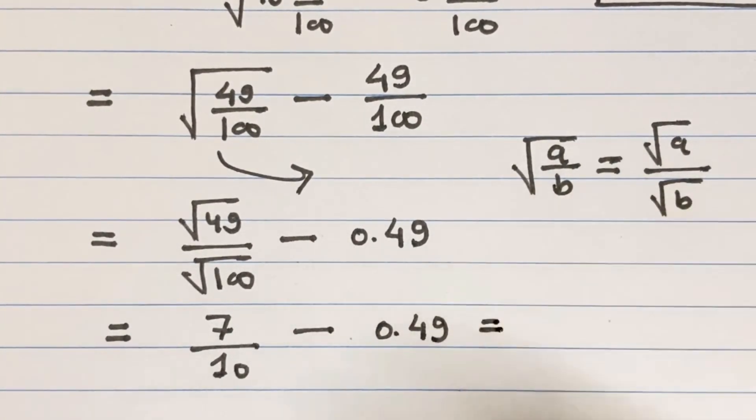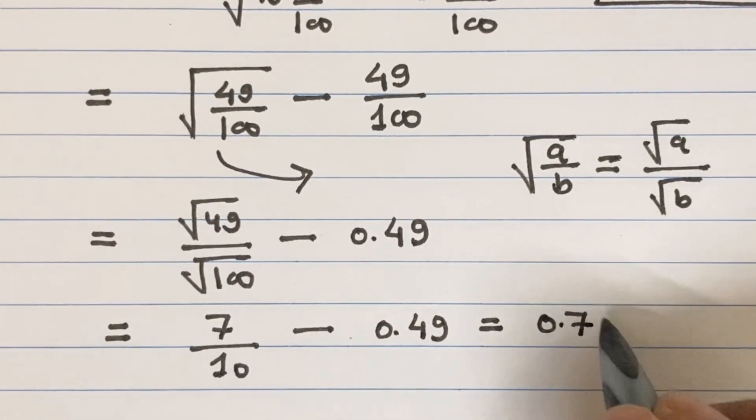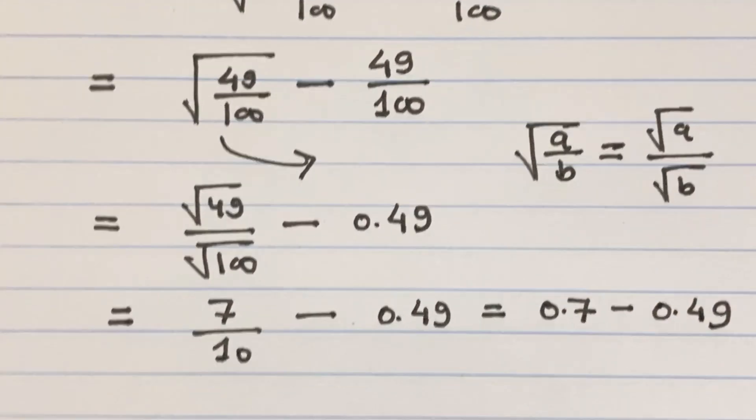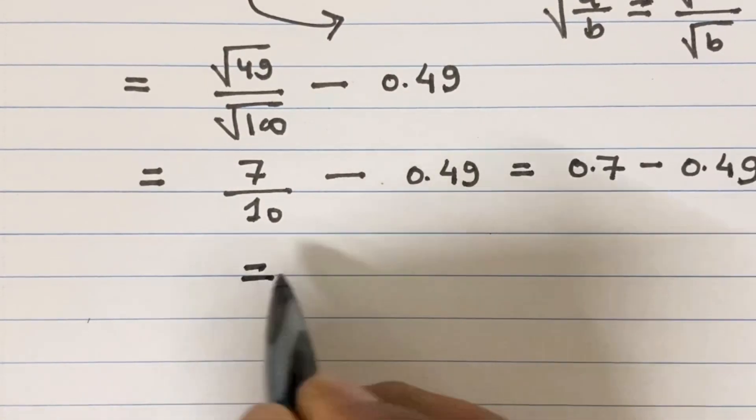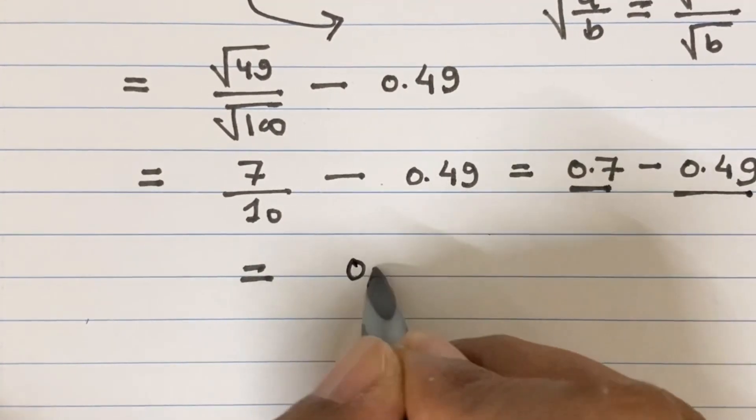This is equals to 7 divided by 10 is 0.7 minus 0.49, which equals 0.7 minus 0.49 is 0.21.